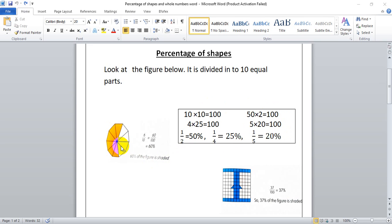Look at this figure, 6 tenth. So the percentage is 60 percentage. The denominator is 10. We need to make the denominator 100 by making equivalent fractions. So we have to multiply the numerator and denominator by 10. So it will be 60 out of 100, 60 percentage.